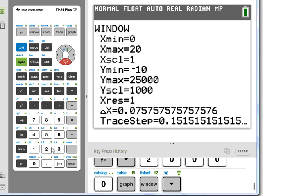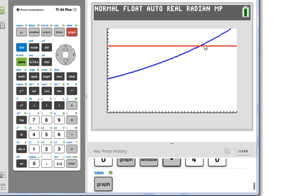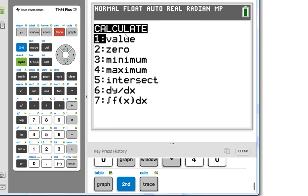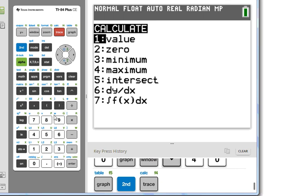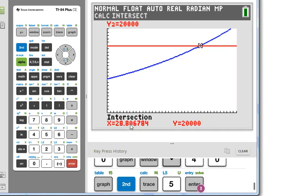I'm going to go to x max of 40. Then to find our intersection point, we can go to 2nd, trace, which gives us this menu. And 5 for intersect, enter, enter, enter. And we have intersection 28.8.